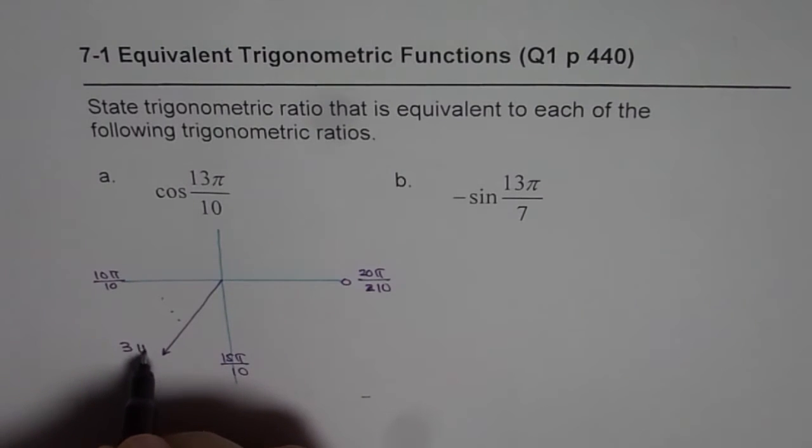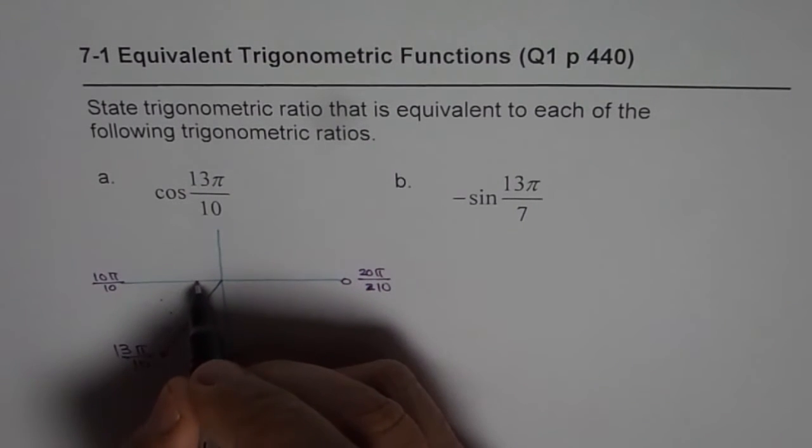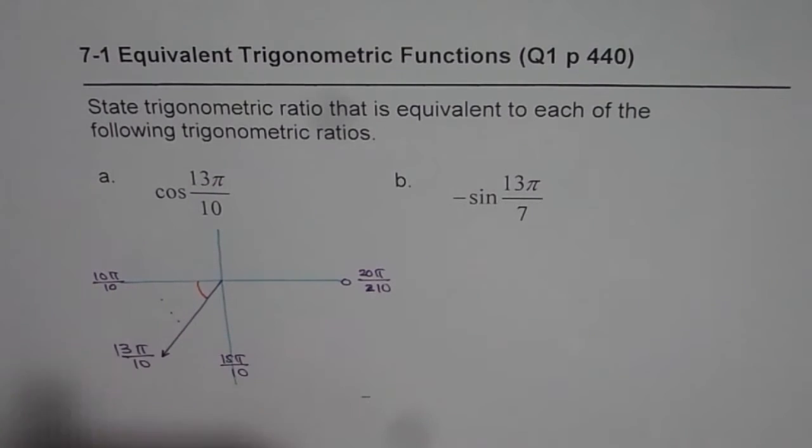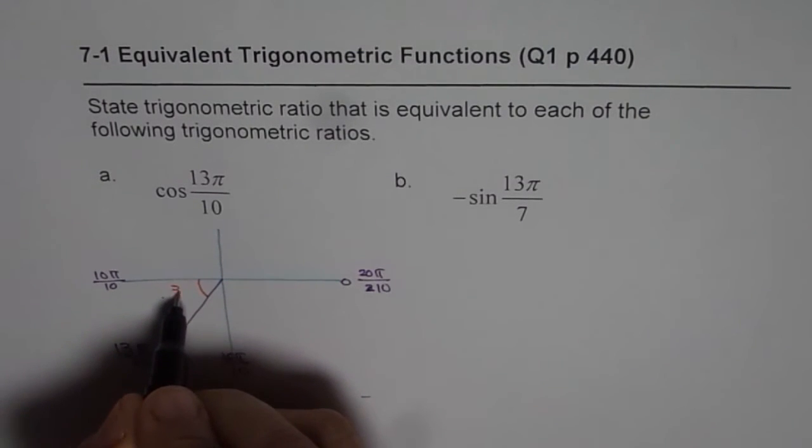So this is 13π by 10 for you. Okay? Here, what is the acute angle? Always find the acute angle. This is your acute angle, right? In this particular case, difference of these two is 3π by 10. So 3π by 10 is the acute angle.